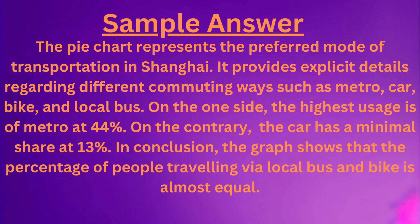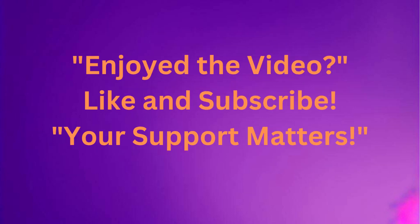The highest usage is of metro at 44%. On the contrary, the car has a minimal share at 13%. In conclusion, the graph shows that the percentage of people traveling via local bus and bike is almost equal.